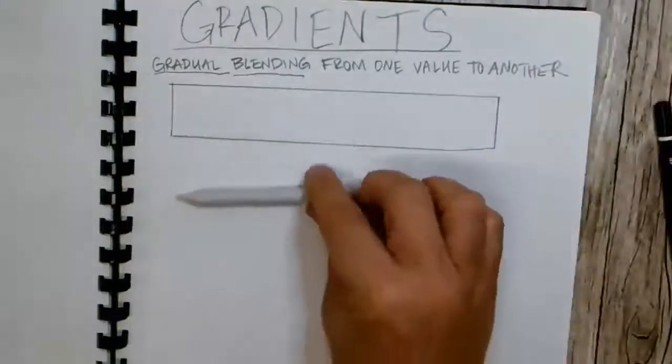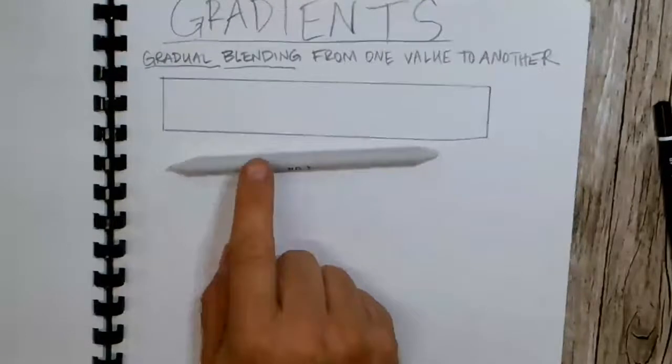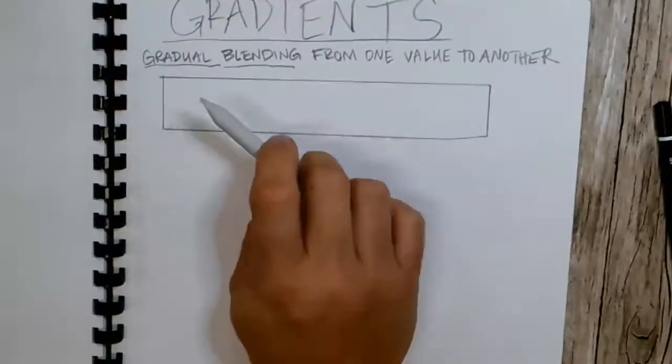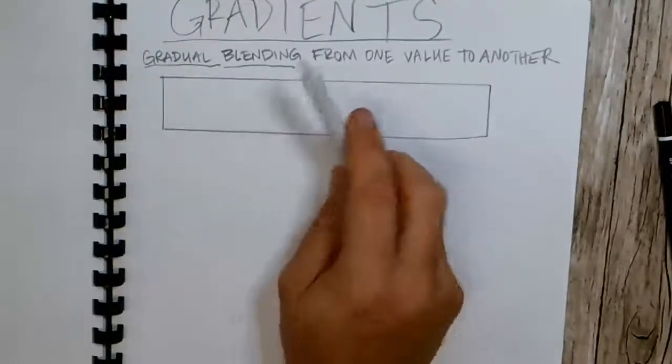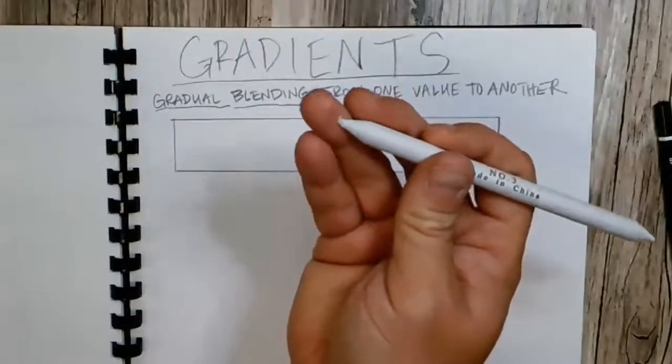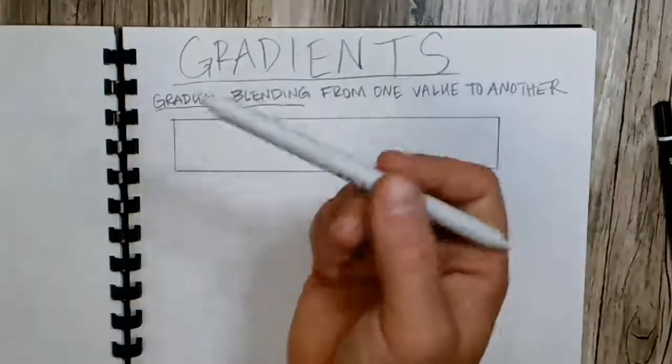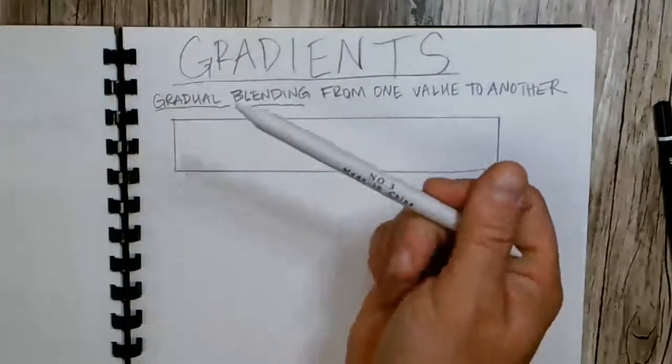And what I just handed out was a blending stump. And this is just rolled paper, rolled to a point. And I want to show you how to use it, so don't use it yet.